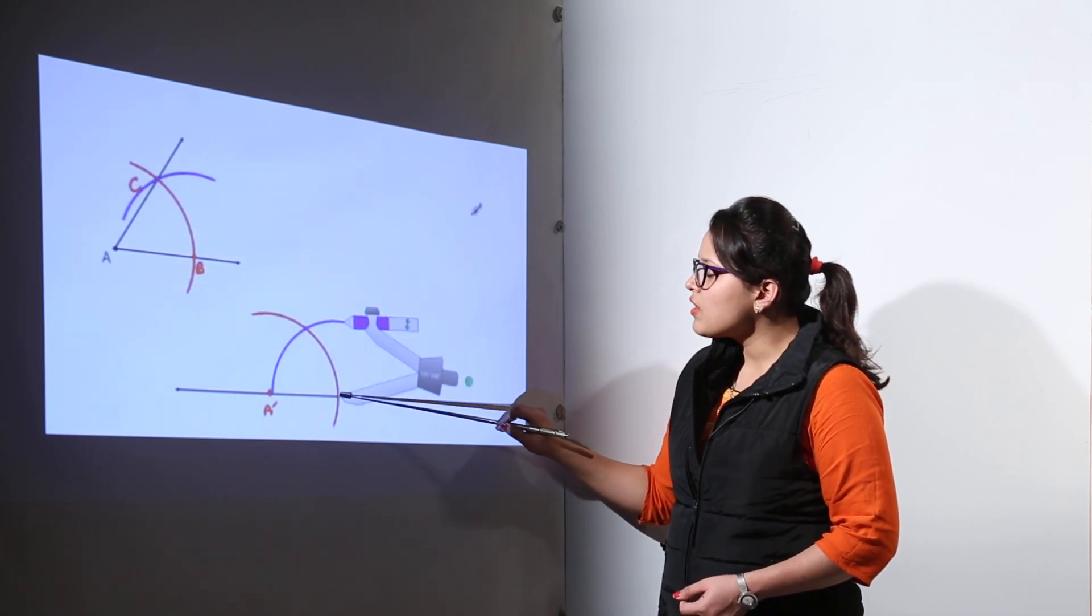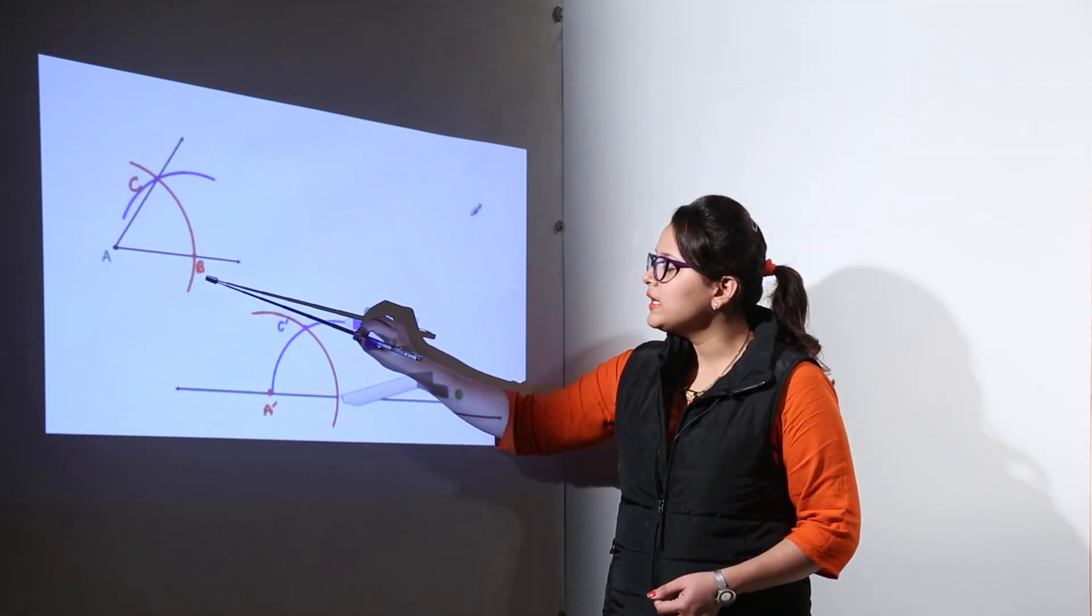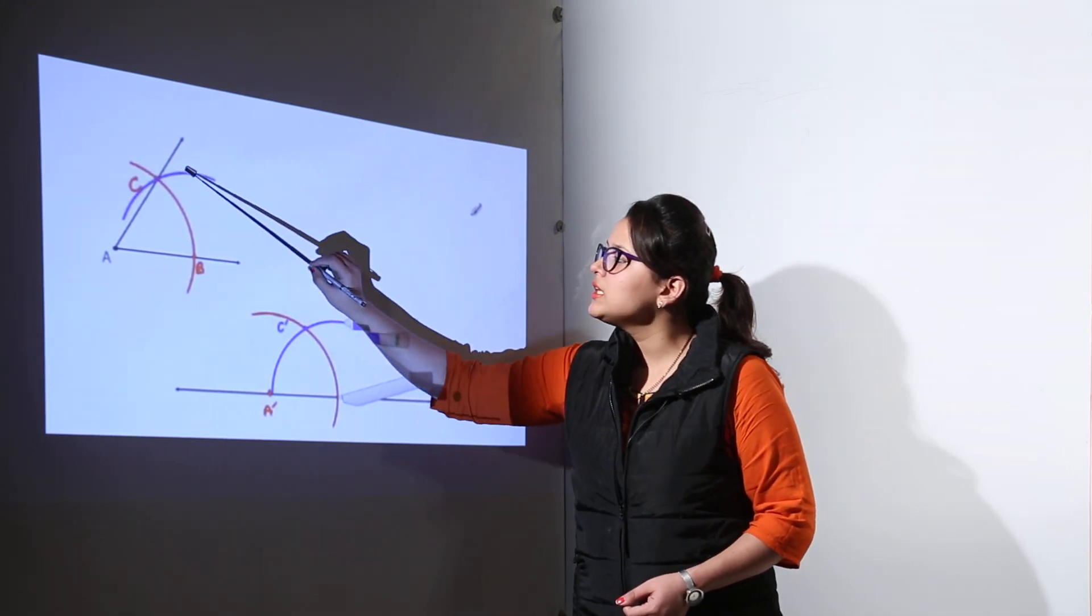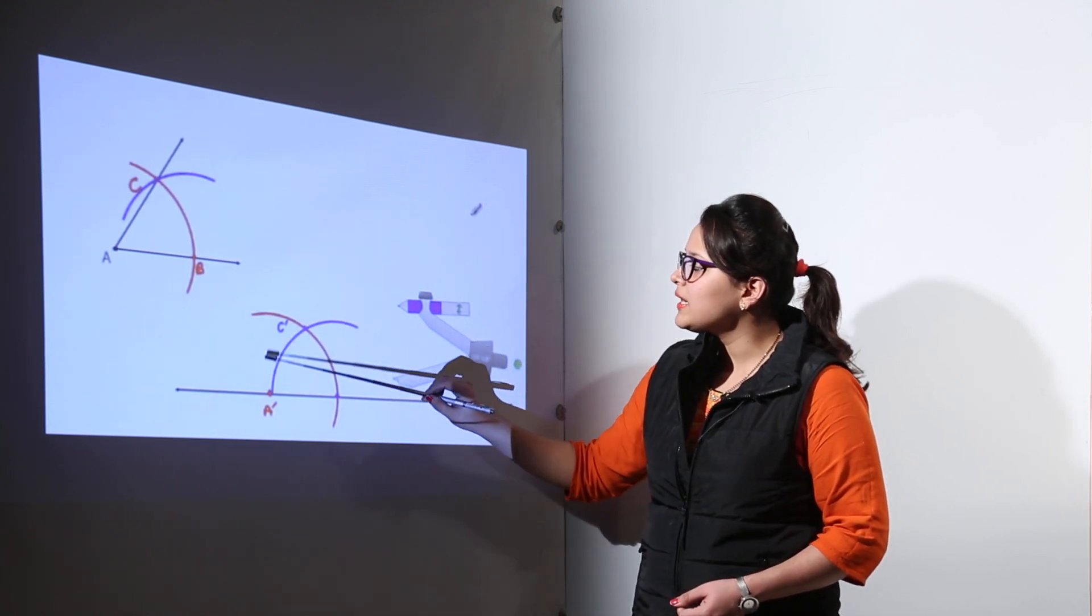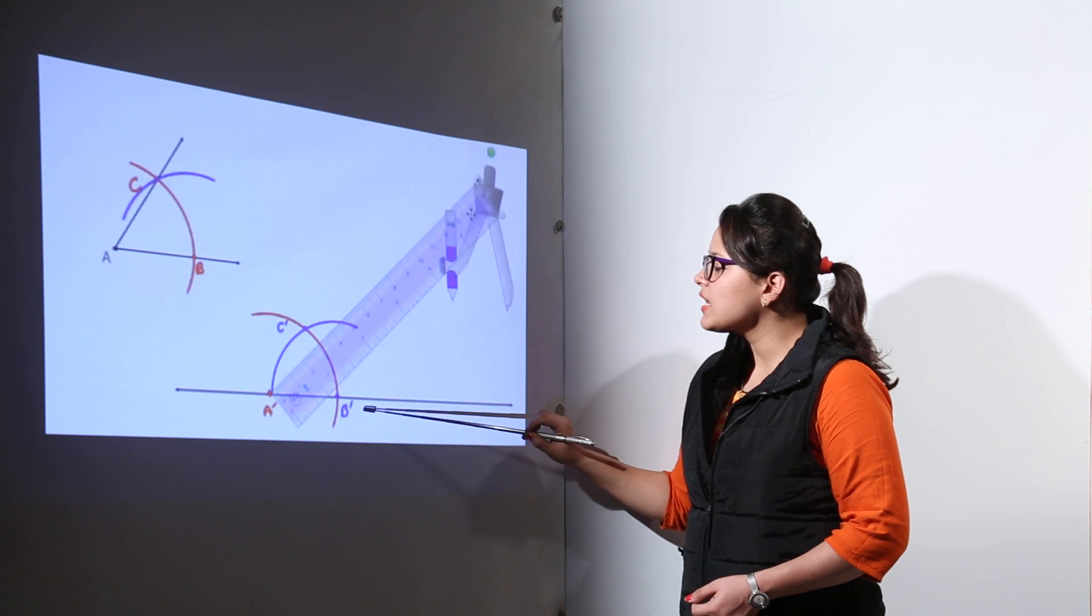The point where you have placed your compass is your point B dash and the point where both the arcs are meeting is your point C dash. So, we have made A dash, C dash and B dash.